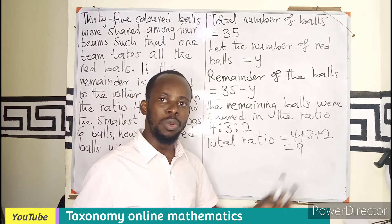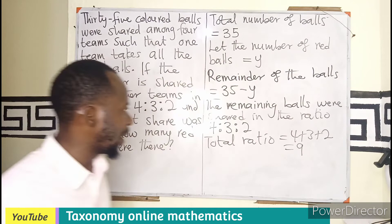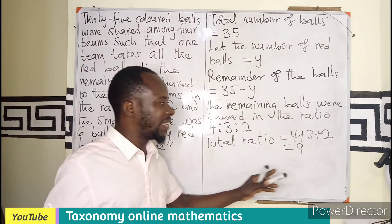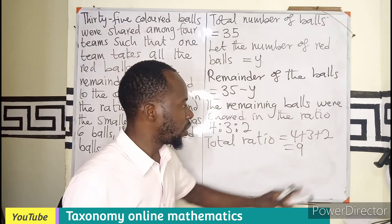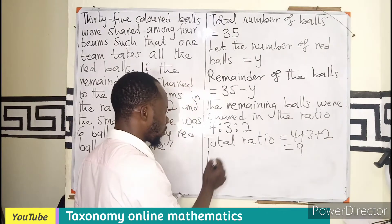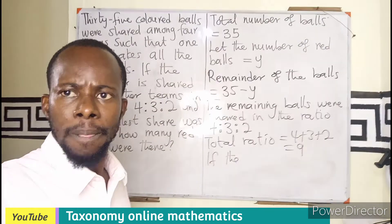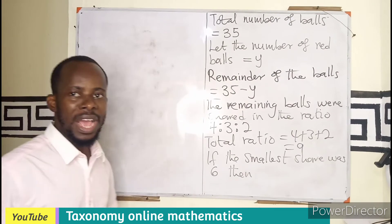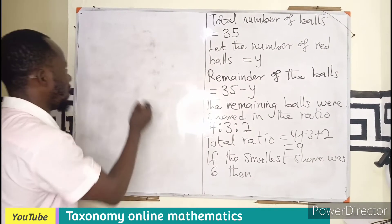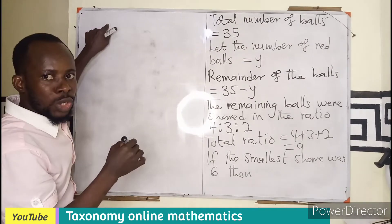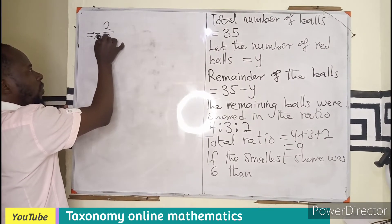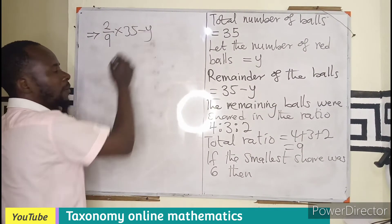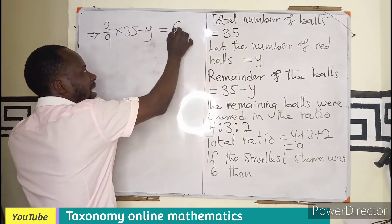And they are saying that the person taking the smallest number of balls had 6. So if the smallest share was 6, then we need to know that to find the smallest share the 6 that they have, it implies that it was the smallest ratio which is 2 out of 9 times the total number of balls they are to share, 35 minus Y. That is what resulted to the number 6.